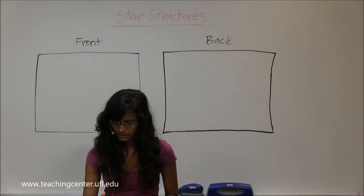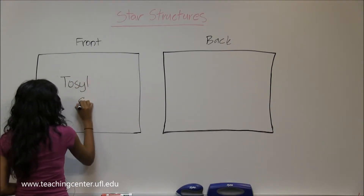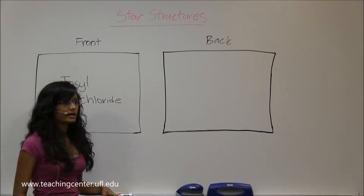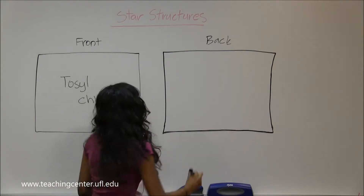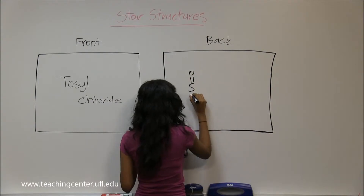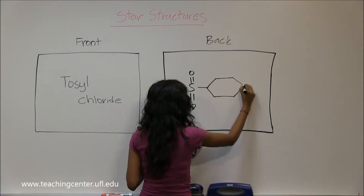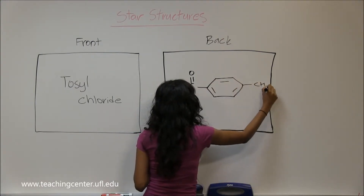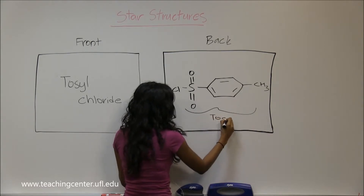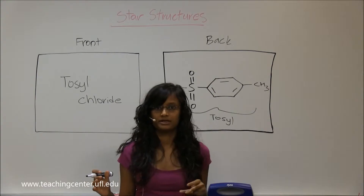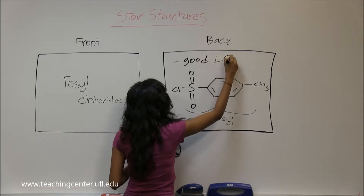The next one is tosyl chloride. Tosyl is a huge structure being drawn here — you have a benzene in the middle and a methyl group, so everything but the chlorine is called the tosyl group. It's huge, which makes it a very good leaving group.